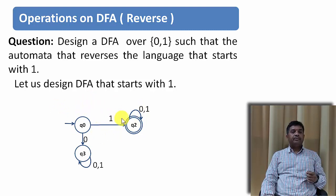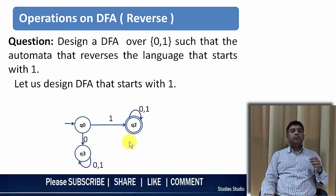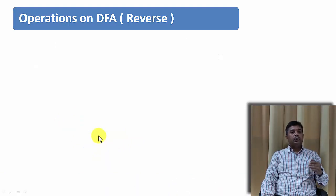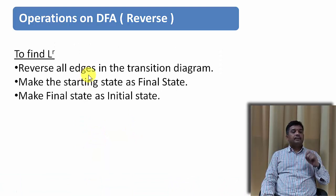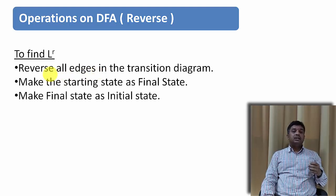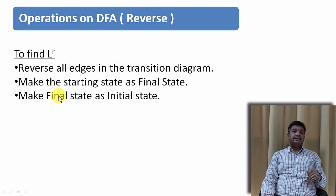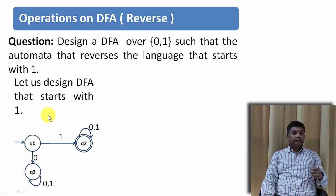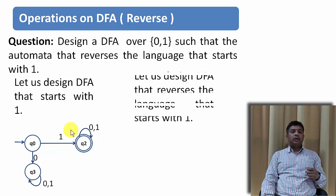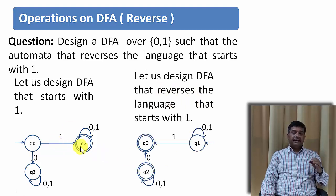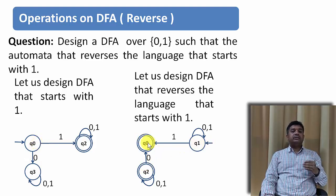Let us design the DFA for this problem. The DFA for the language starting with 1 looks like this. To perform reversal, three steps are needed: make all edges in the transition diagram go in the reverse direction, make the starting state a final state, and make the final state the initial state. All non-final states become final states. Whatever strings this reversed DFA generates will be the reversal of the strings generated by the original.